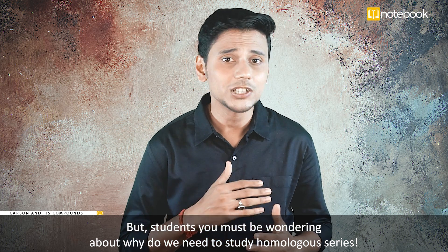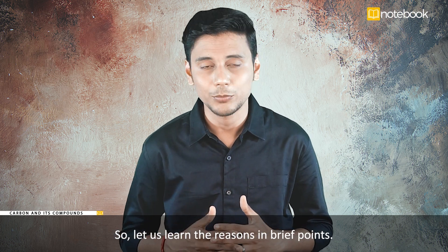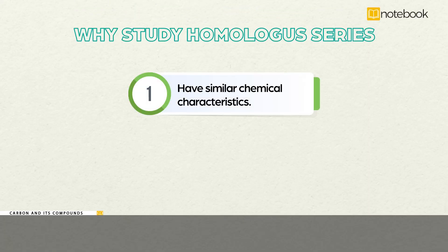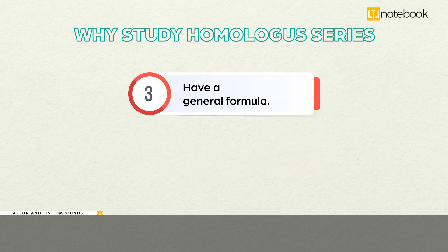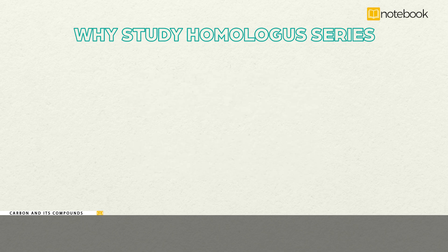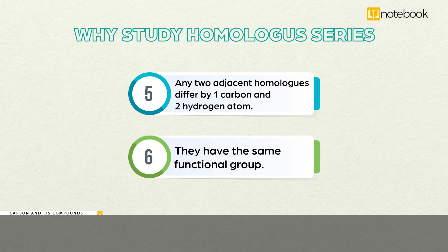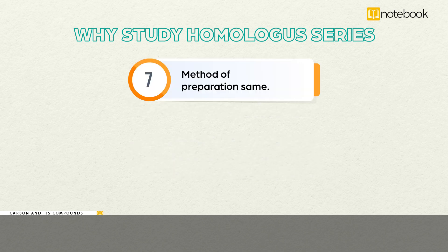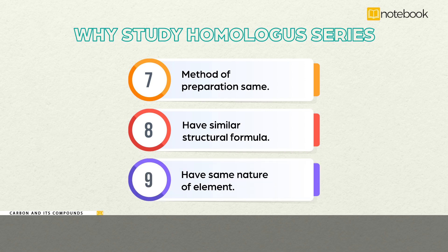You must be wondering why we need to study homologous series. Let us learn the reasons in brief. Homologous series have similar chemical characteristics. They have a gradual change in their physical properties with increase in molecular mass. They always have a general formula to describe. The difference in molecular mass of any two adjacent homologues is 14. Any two adjacent homologues differ by one carbon and two hydrogen atoms. They have the same functional group. Their method of preparation is also the same. They also have similar structural formula and the same nature of element.